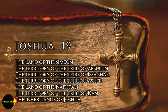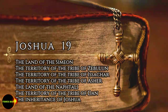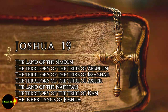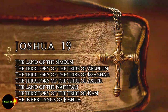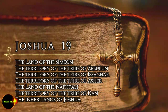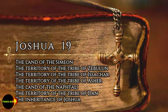The fourth lot came out for Issachar, clan by clan. Their territory included Jezreel, Kisseloth, Shunem, Hapharaim, Shion, Anaharath, Rabbath, Kishion, Ebaz, Remath, and Ganim, Enhadah, and Beth-Pazes. The boundary touched Tabor, Shehazuma, and Beth-Shemesh, and ended at the Jordan. There were sixteen towns and their villages. These towns and their villages were the inheritance of the tribe of Issachar, clan by clan.